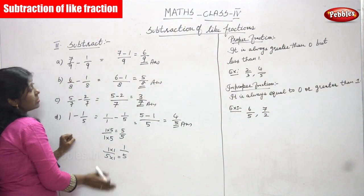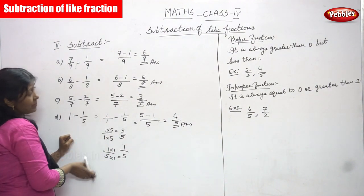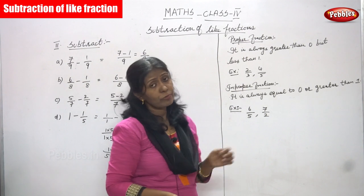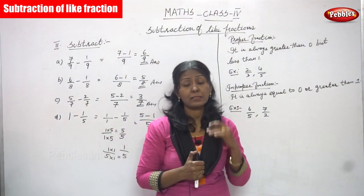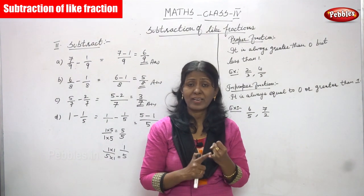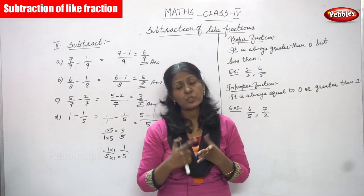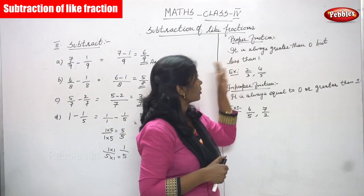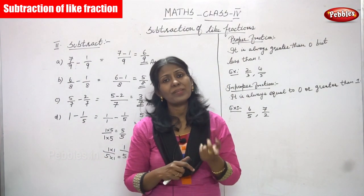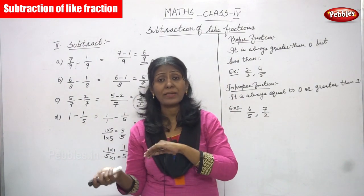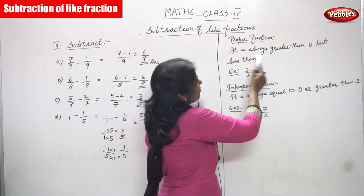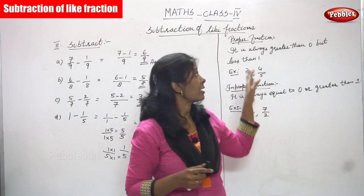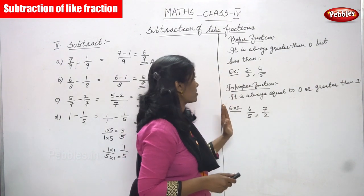These are the exercise sums for subtraction of like fractions. Now we are going to move on to the types of fractions. There are different types: proper fraction, improper fraction, mixed fraction, like fraction, and equivalent fraction — we have seen many of these in the introduction class. Now, a proper fraction means the numerator is lesser than the denominator, and its value is always greater than 0 but less than 1.